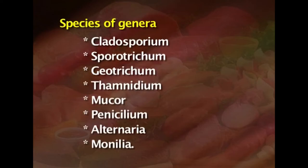Molds of many genera may reach the surface of meats and grow there. Especially important are species of the genera Cladosporium, Sporotrichum, Geotrichum, Thamnidium, Mucor, Penicillium, Alternaria, and Monilia.